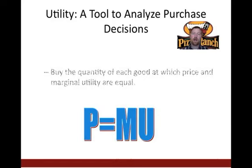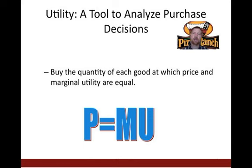This is a definitional slide covering the optimal purchase rule using marginal utility. You're going to buy the quantity of each good at which price and marginal utility are equal — that will give you the greatest satisfaction. So: P equals MU, price equals marginal utility.